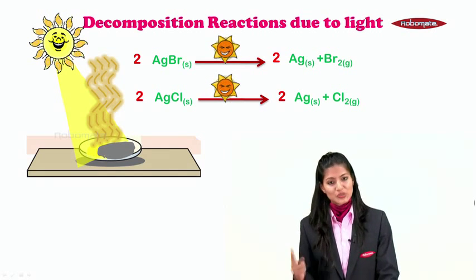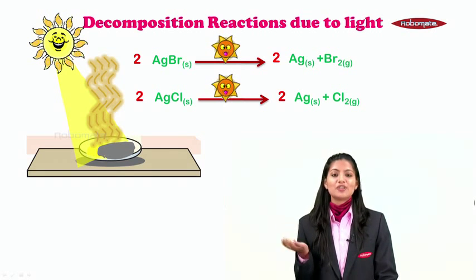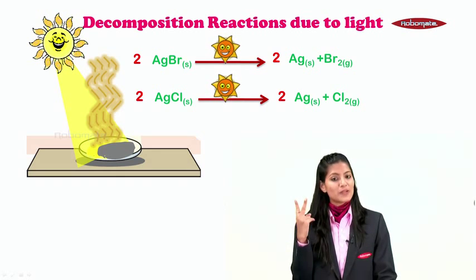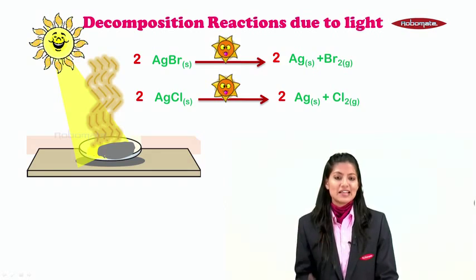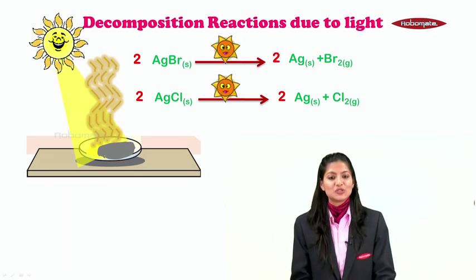Same thing happened: we took 1 reactant which in the presence of sunlight got split down into 2 simpler products, Ag and Cl2. So again a decomposition due to light.